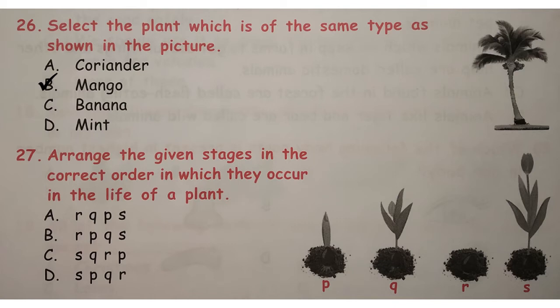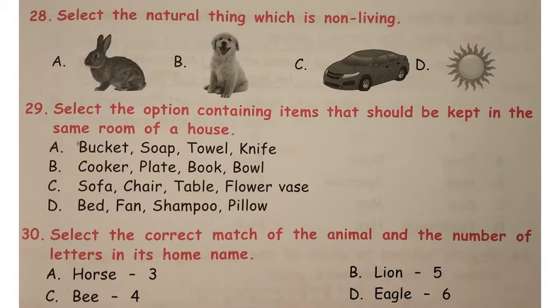Question number 27: arrange the given stages in the correct order in which they occur in the life of a plant. The answer is option B.